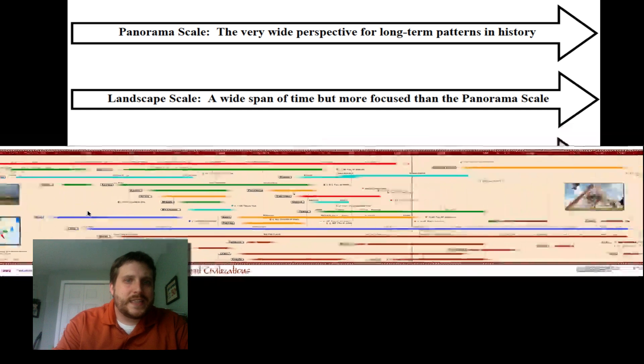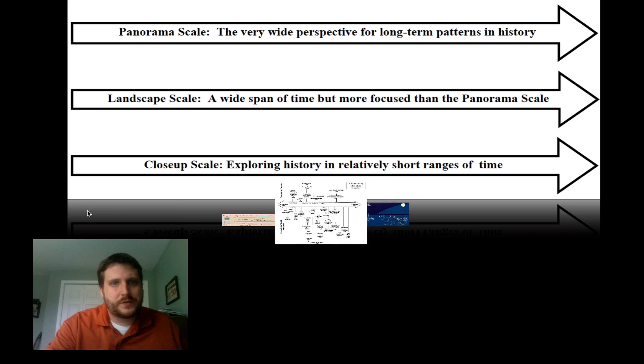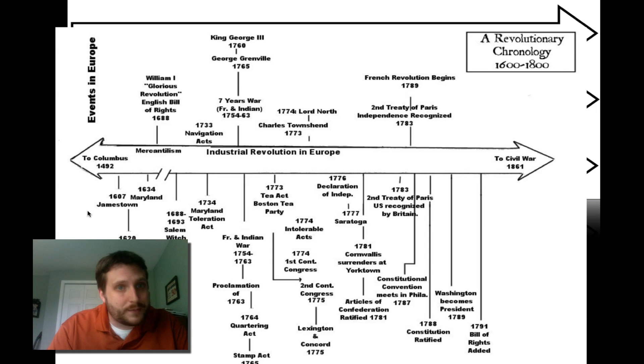Then we've got a landscape scale. This is a wide span of time, but it's more focused than the panoramic scale. So it's going to be a smaller time frame, but still pretty wide if you take a look at it. So if you look at this one, this was our panoramic scale, 400 years of history, focused on the United States. But again, still pretty broad. You're not learning about individual events.